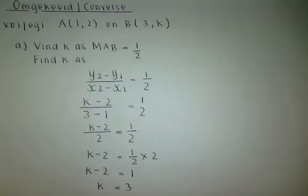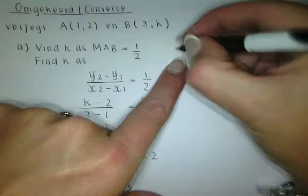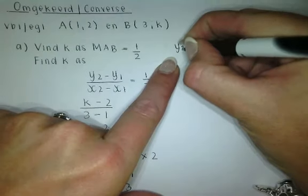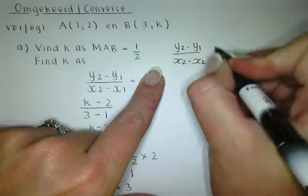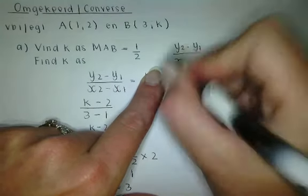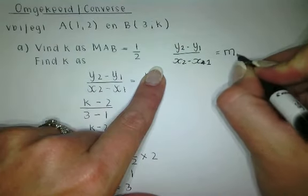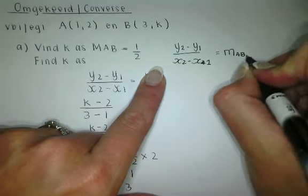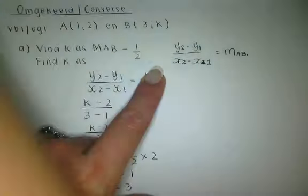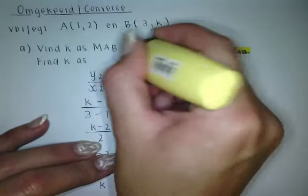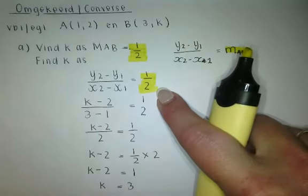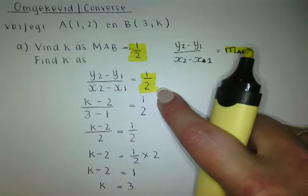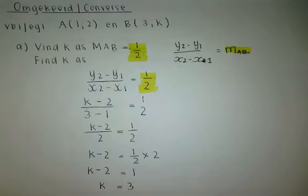Stick to basics. Write your formula down. What is your formula for gradients? That's it, y2 minus y1 divided by x2 minus x1. This is the gradient formula for line AB. Are you with me? But what is the gradient of AB? They gave it to you. So I'm substituting into the gradient. The gradient of AB is a half, so I'm going to put it in there.